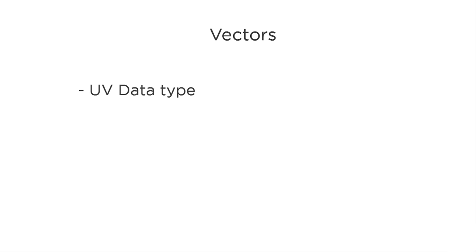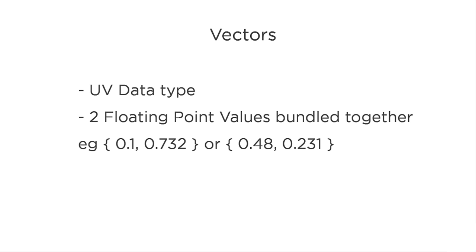The data type of UVs are called a vector. This is simply just two floating point values that are bundled together into one data type. We don't have to refer to the individual components as U or V, as technically they are just individual float values.